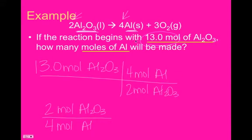So, since we've got moles of Al2O3 on top here, that means we want this moles of Al2O3 in the bottom in the next block, which means that the 4 moles of aluminum have to go in the top.